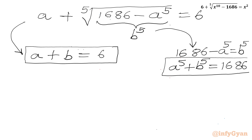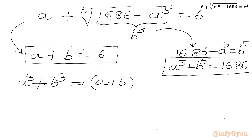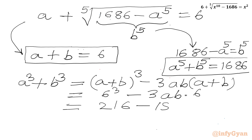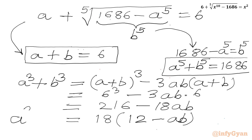Now I can use one algebraic formula. For a cubed plus b cubed, the formula is: (a plus b) cubed minus 3 times ab times (a plus b). Putting in a plus b equals 6, we write 6 cubed minus 3 times ab times 6, which gives 216 minus 18ab. Taking 18 common, we get 18 times (12 minus ab). We will call this equation 3.